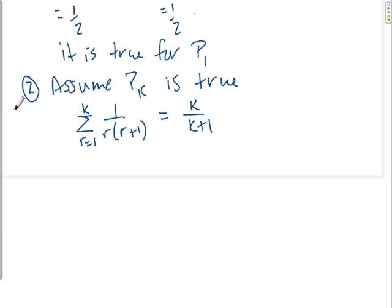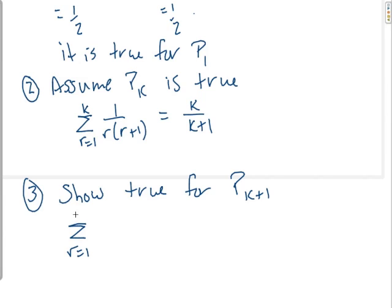All right. And so now I must, third step. The third step says I must show true for Pk plus 1, which means that this sum, r equals 1 to k plus 1 of 1 over r times r plus 1,